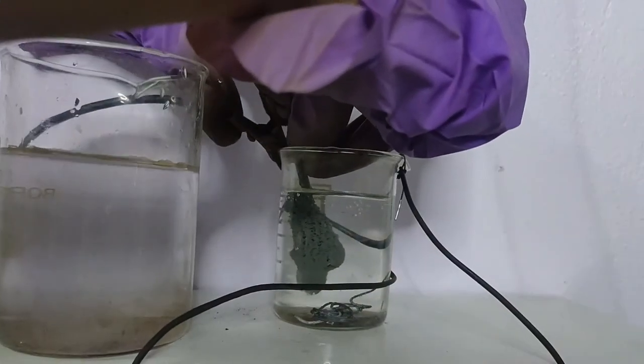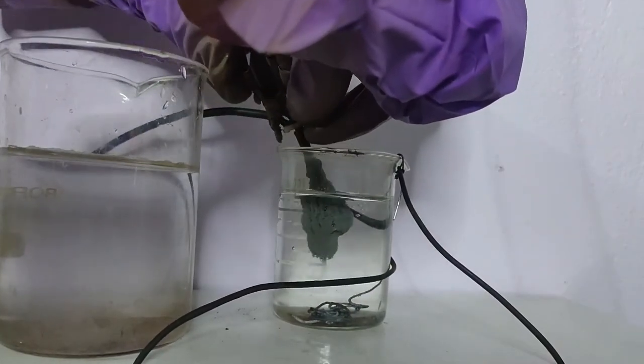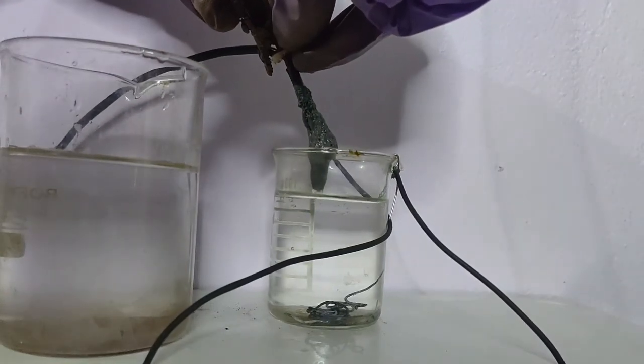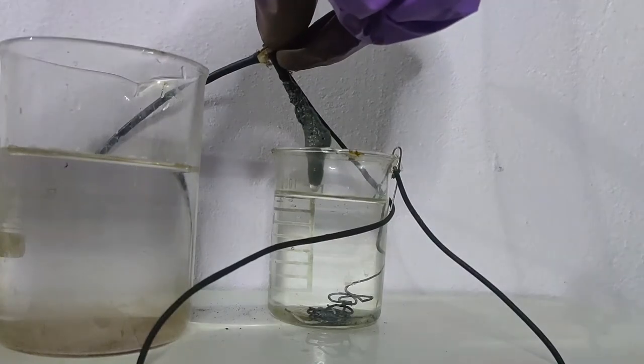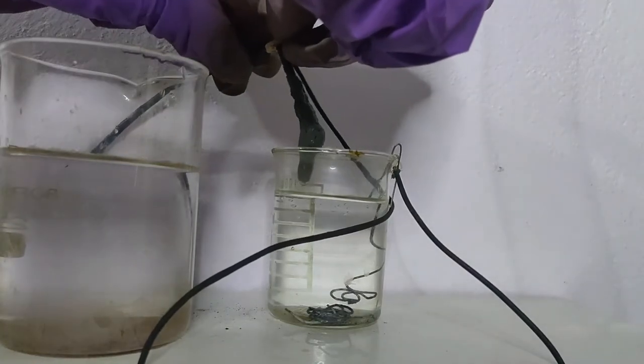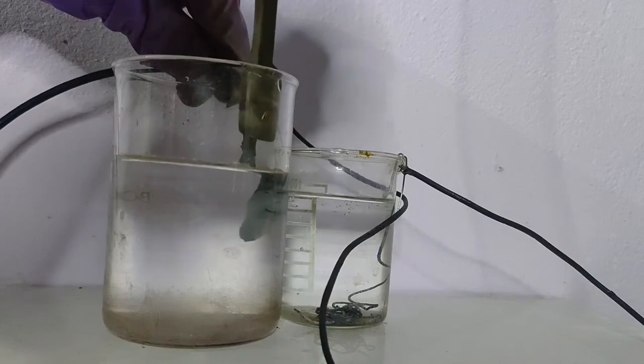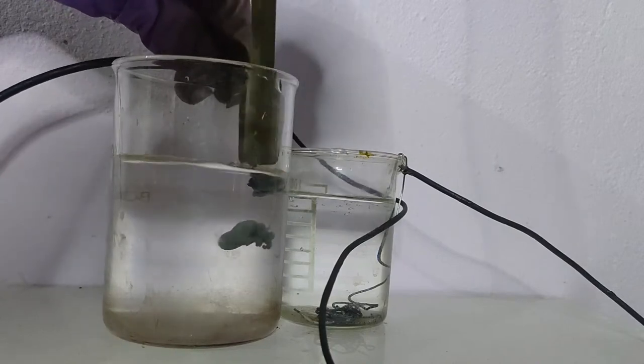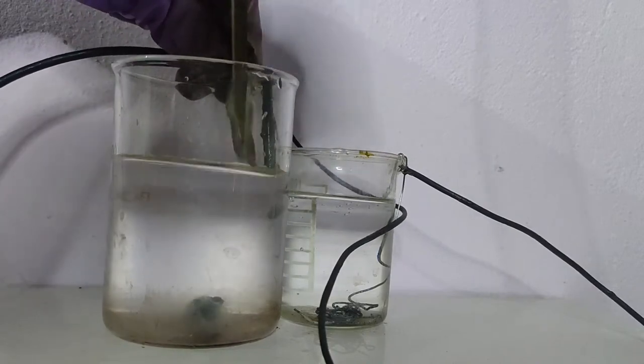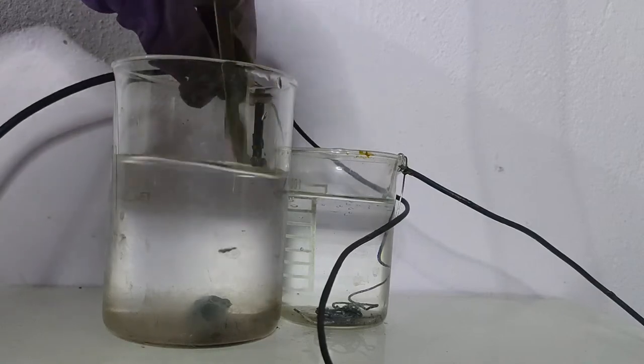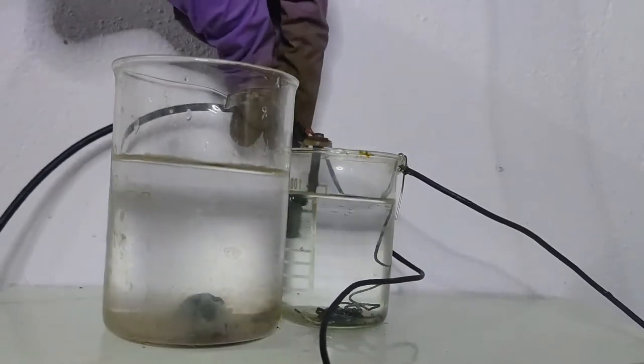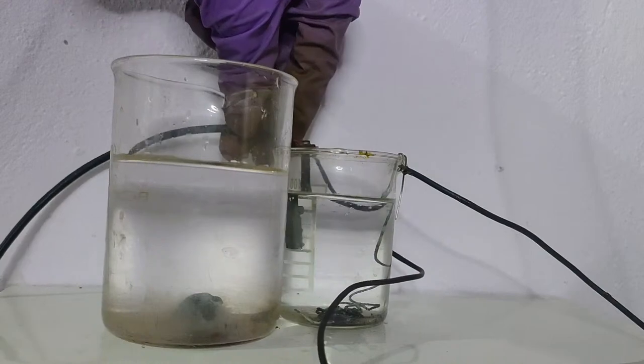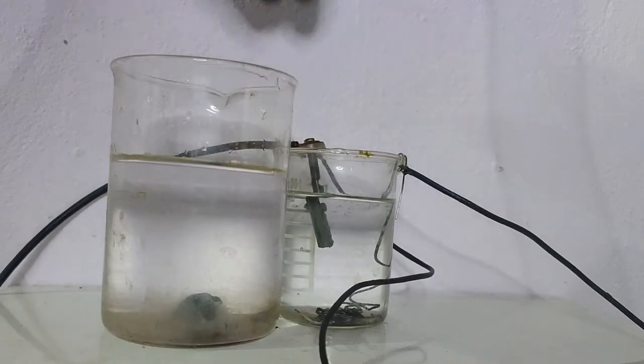Now, after the sponge has grown bigger, I will harvest the crystals. I took out the crystals from the beaker and wash them with water. Then again, put the cathode to get more crystals.